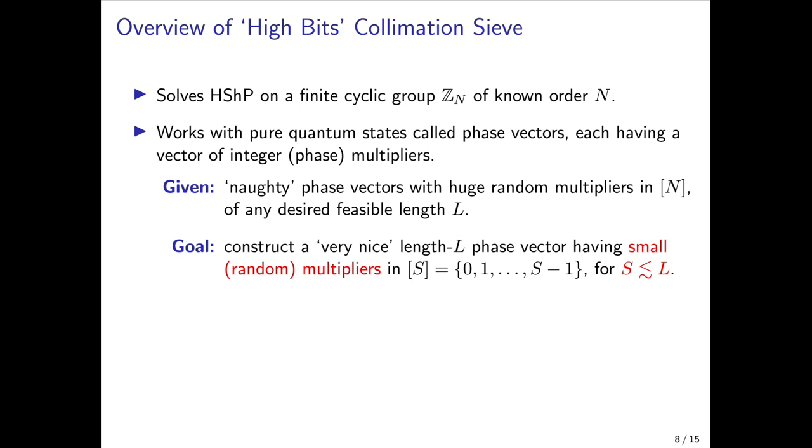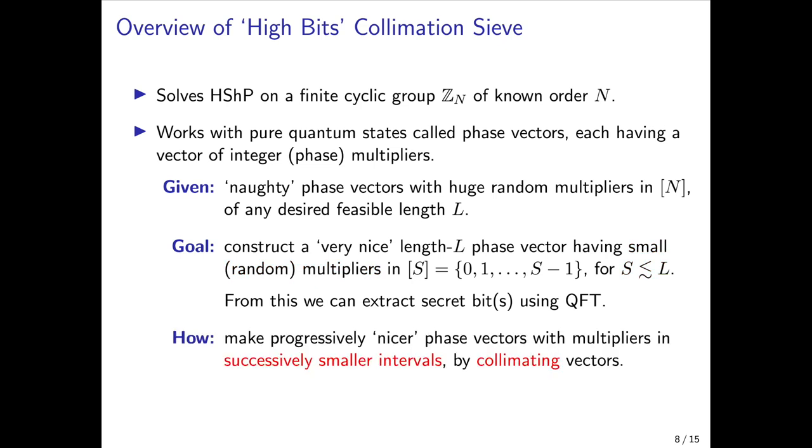What makes them naughty is that they have huge and random phase multipliers in the interval between 0 and N. These vectors can have any desired length L that you like, except that it has to be feasible in that the phase vectors have to be storable within the available classical memory. So we can think of L as being roughly equal to the amount of quantumly accessible classical memory that we have. The goal of the sieve is to construct from these naughty phase vectors a very nice phase vector of roughly the same length L. What makes this phase vector nice is that it should have very small but still mostly random multipliers from a very small interval S, where S is also approximately equal to L or even smaller if possible. From such a very nice phase vector, we can then use the quantum Fourier transform to extract one or more of the secret bits.